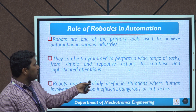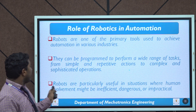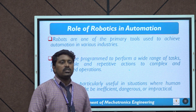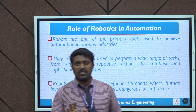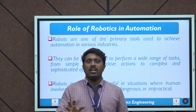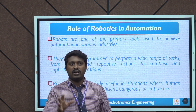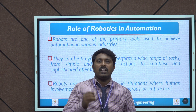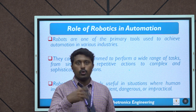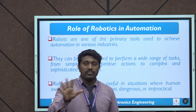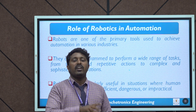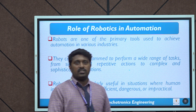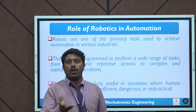Robots are particularly useful in situations where human involvement might be inefficient, dangerous, or impractical. Robots are mainly used in industry for jobs that are inefficient for manual laborers, or where the work is harmful to humans — helping to avoid risk and improve efficiency.